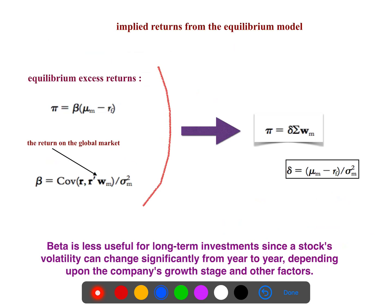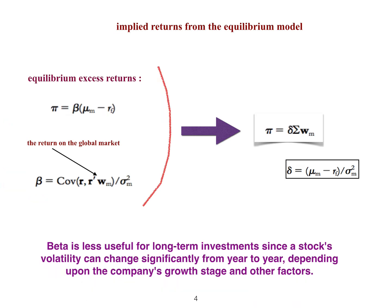Equilibrium excess risk is this formula. And beta, when you do the regression, when you combine one and two, you get this one, you get three. Beta is useful for long-term investments, since the stock's volatility can change significantly from year to year, depending upon the company's growth stage and other factors.